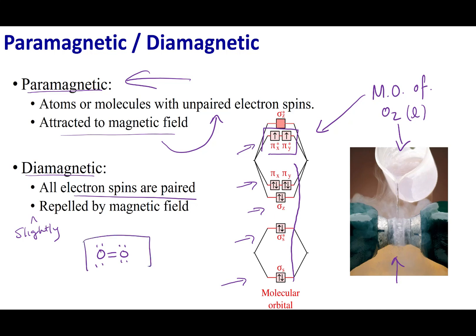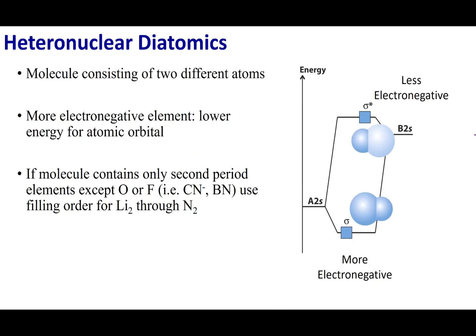And this is something that we don't see in the Lewis dot structure. Now, to shift gears just a little bit, we can also talk about heteronuclear diatomic. And what I mean by that is up until now, we've been talking about homonuclear diatomic, meaning I combine a nitrogen with another nitrogen. But what happens when I go ahead and combine nitrogen with a carbon or nitrogen with a boron? How do we change our molecular orbital diagram?